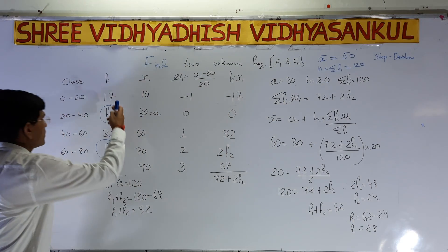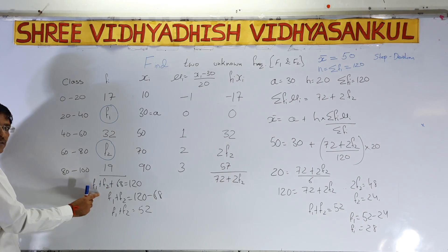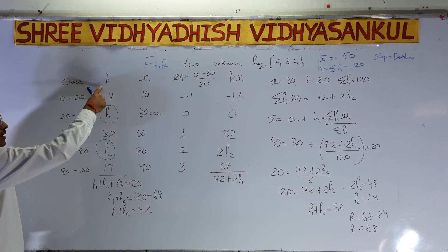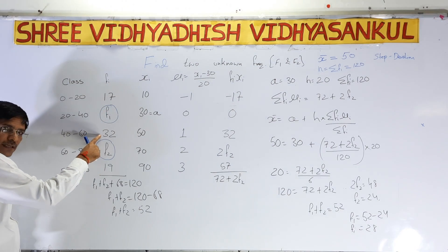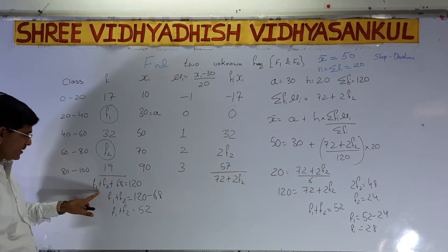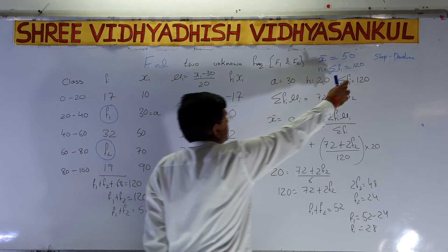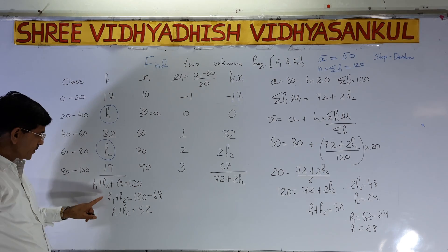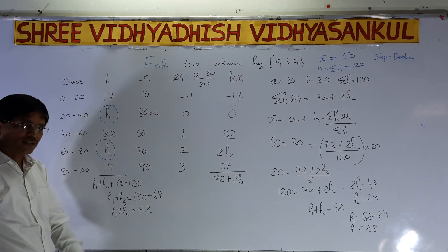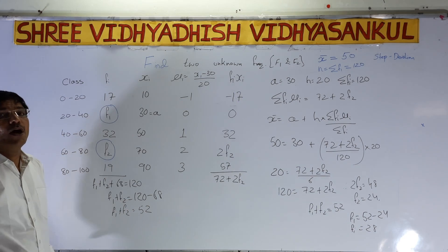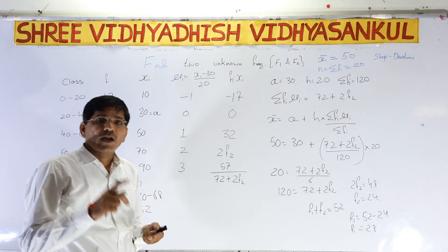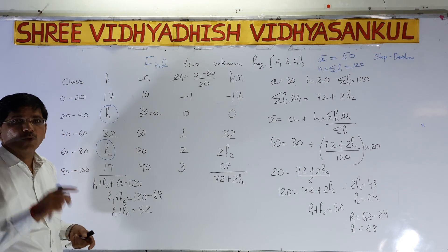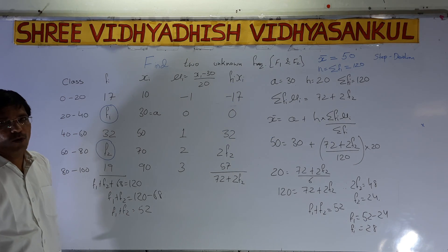Now I add all the known frequencies: 17 + 32 + 19 = 68. So f1 + f2 + 68 = 120, because the total is given as 120. Therefore, f1 + f2 = 120 − 68 = 52. Remember: whatever values you get for f1 and f2, their sum must equal 52; otherwise you have the wrong answer.